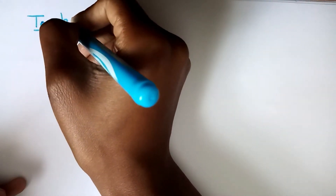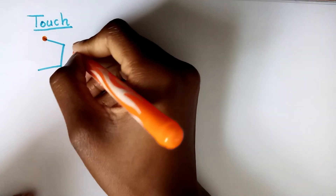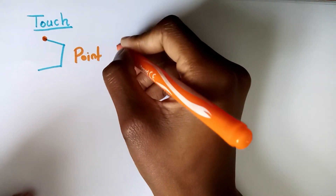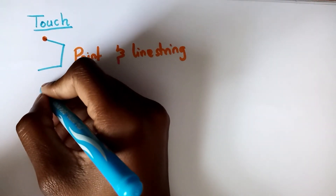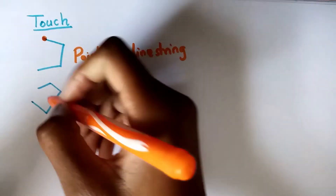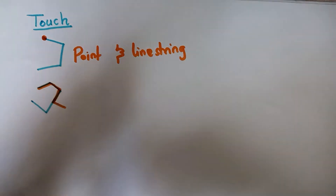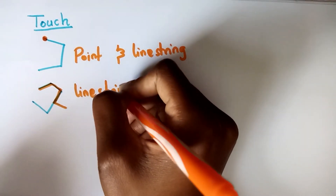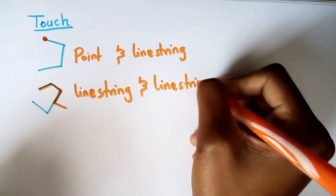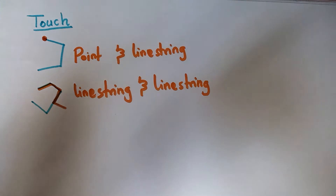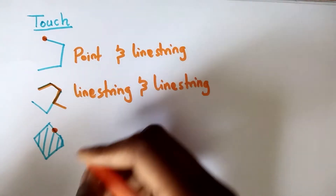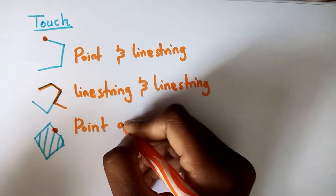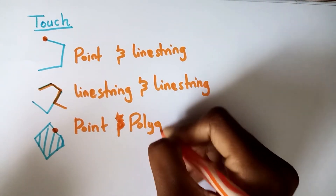You can also test for a touch. ST_Touches tests whether geometries touch at their boundaries but do not intersect in their interiors. For example, a polygon and a line string where boundaries touch but don't intersect at the interiors. This is also seen with a polygon and a point, where the point does not fall into the interior of the polygon.